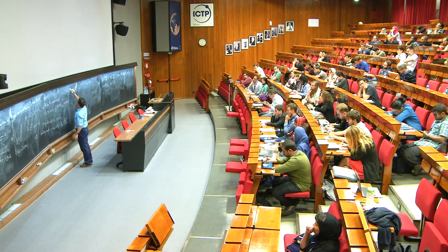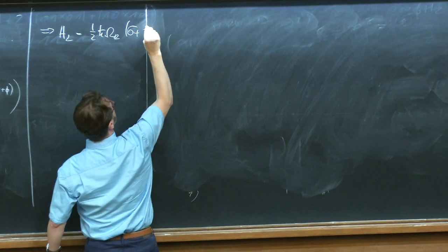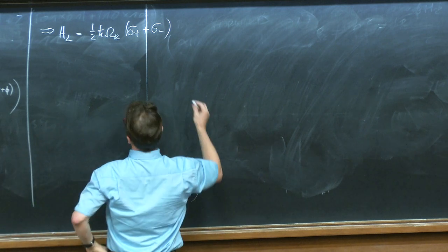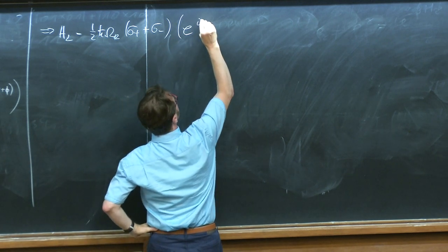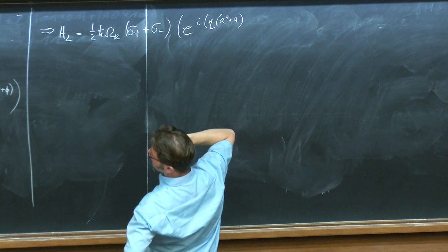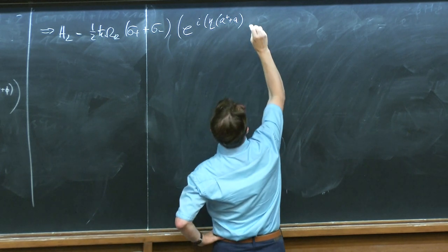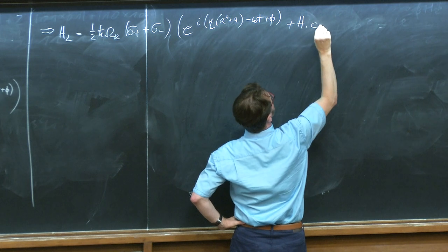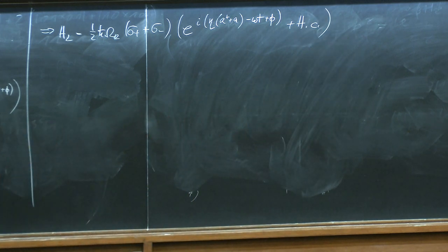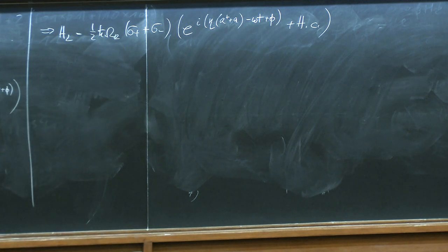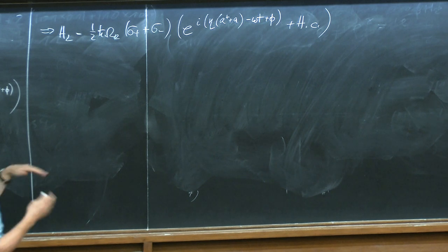We find H_L equals one-half H-bar omega-Rabi times sigma_plus plus sigma_minus. And then I simply rewrite this as e to the i eta times (A-dagger plus A), minus omega t plus phi, plus the Hermitian conjugate. So that's now the Hamiltonian that we have. You can do numerical simulations of this Hamiltonian, but there's a better — often an analytical — way to approach it.